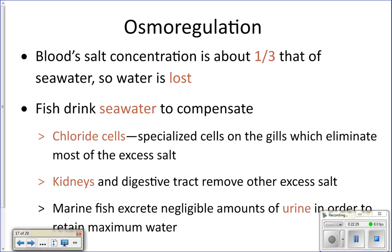Osmoregulation is maintaining a salt-water balance with the surrounding seawater. Sharks maintain a concentration equal to or greater than surrounding seawater. Osteichthyes do this differently — they maintain a blood salt concentration about one-third of the surrounding seawater, which is less than the surrounding seawater. Because there's more salt outside their body, water tends to leave, so bony fish tend to get dehydrated. To compensate, they drink seawater.